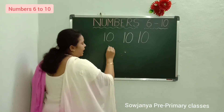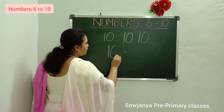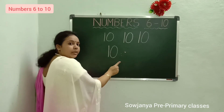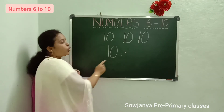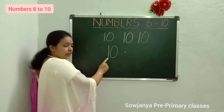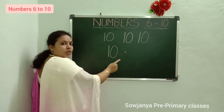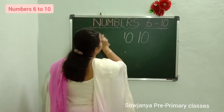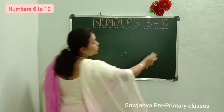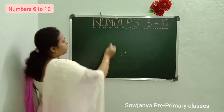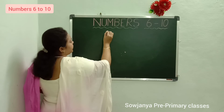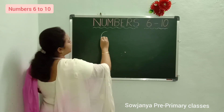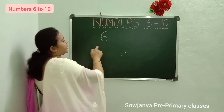What is this number? 10. How to write 10? 1, 0, 10. Ok children, now again we will write from 6 to 10. Now 6. Right curve, put a small circle inside. 6.